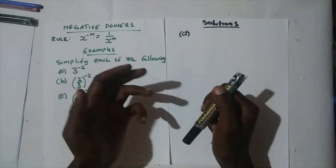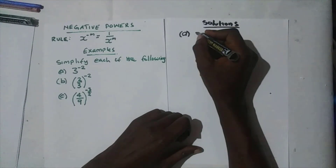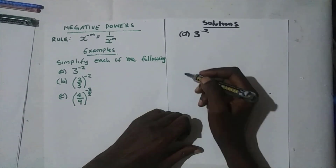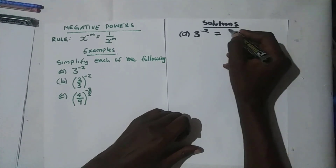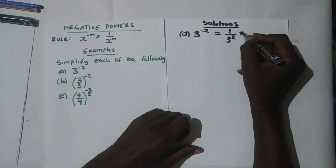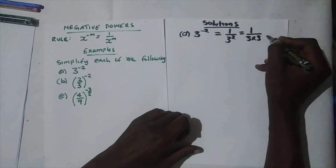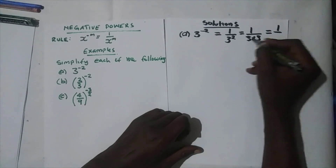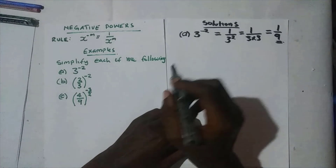The first example is three to the power negative two. According to the rule, three to the power negative two equals one over three squared, which is the same as one over three times three, which is nine. So we have one over nine, and we have simplified three to the power negative two.